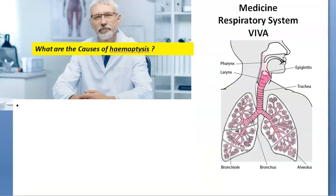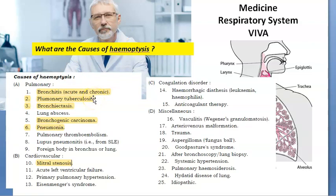Hemoptysis means blood in sputum. It can be caused because of pulmonary causes, cardiovascular causes, and coagulation disorders. Pulmonary causes mainly include bronchitis, pulmonary tuberculosis, bronchiectasis, carcinoma, pneumonia. Cardiovascular causes can be mitral stenosis. So actually hemoptysis is coughing of blood — it can be a symptom of pulmonary and serious disease.